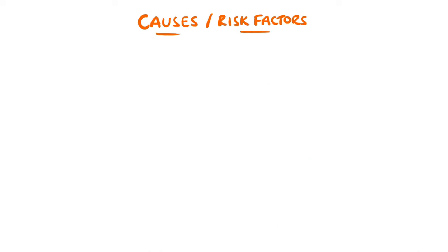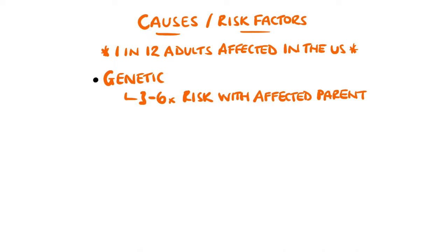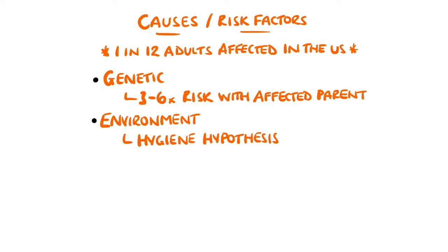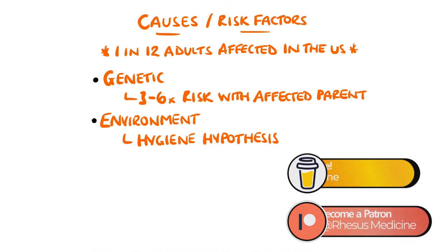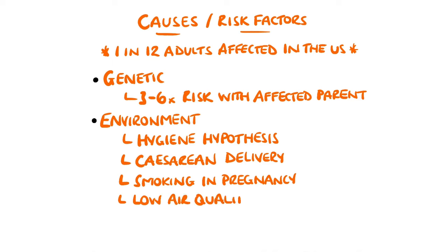Asthma is thought to affect 235 million people worldwide, with around 1 in 12 adults in the United States being affected. Multiple factors come together to cause asthma. Genetically, having a parent with asthma makes you between 3 and 6 times more likely to develop it. Environmental factors can affect not only exacerbations but also the development of asthma. The hygiene hypothesis proposes that reduced exposure to pathogens at a young age can increase the Th2 response and predispose to asthma, linked to a 20–80% increase in asthma risk with caesarean section delivery. Other factors include smoking during pregnancy and low air quality, and a history of atopic disease is the strongest risk factor.